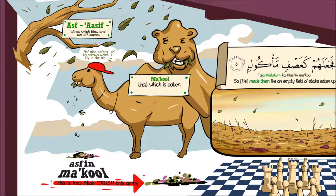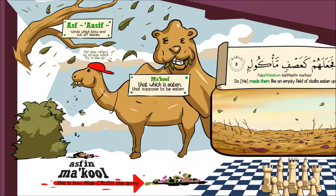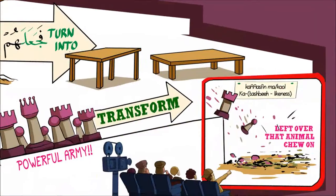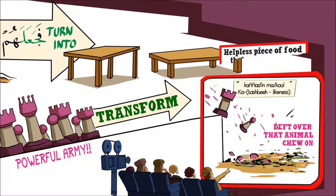This is one meaning. Then مَأْكُول also means not just that which is eaten, but that which is supposed to be eaten - something that is there and it can't help itself, you're going to go eat it. An animal that is about to be eaten can at least run away, but straw or hay sitting in front of an animal - that food is defenseless. Its destiny is to get destroyed. Allah compares them to a helpless piece of food that has no option but to get eaten up by its enemy. It's like they had no escape.